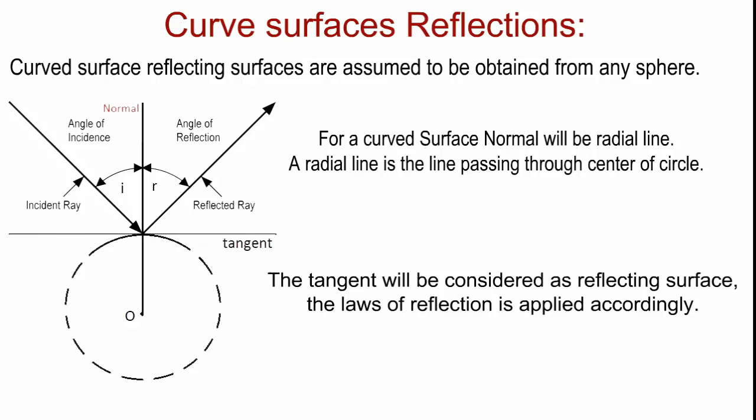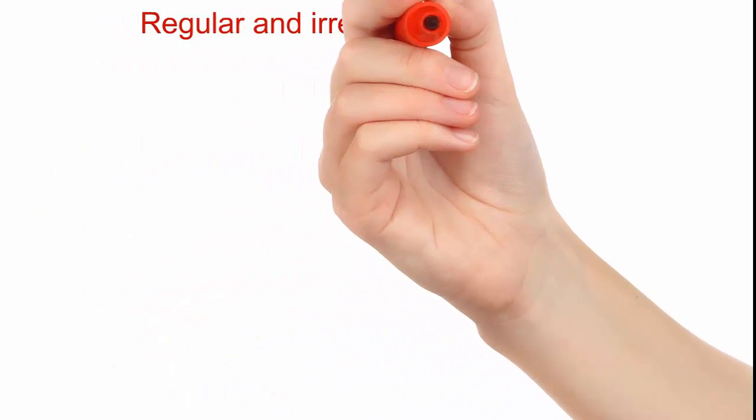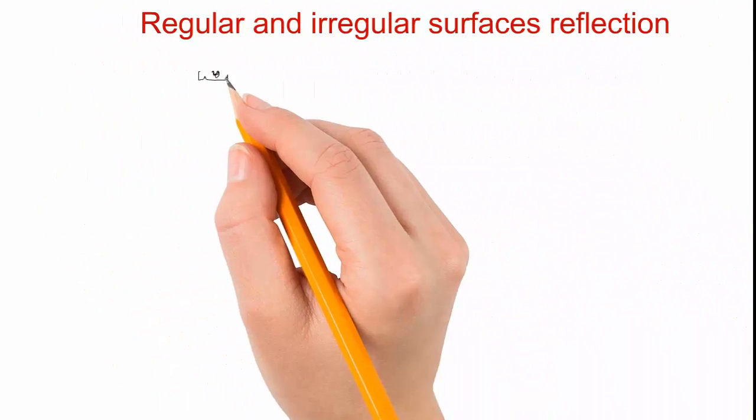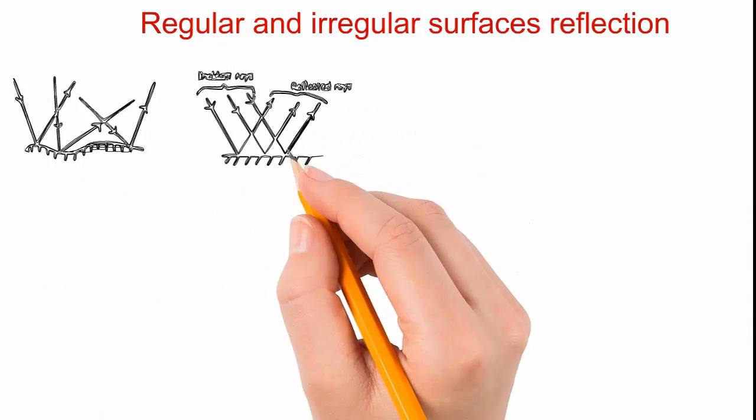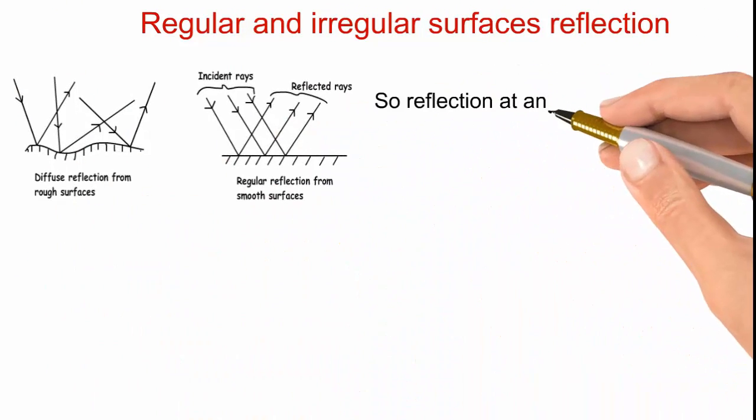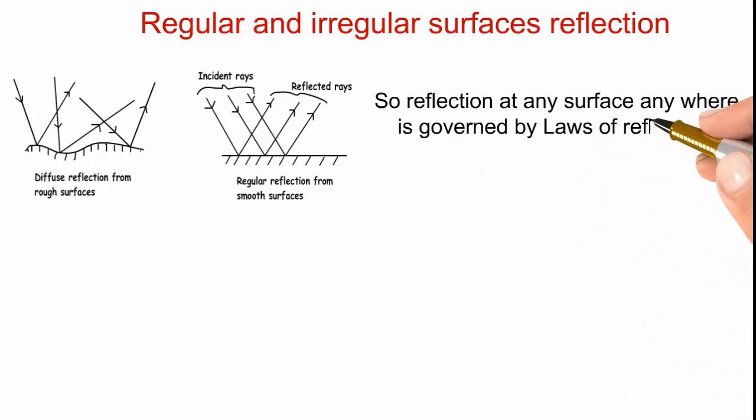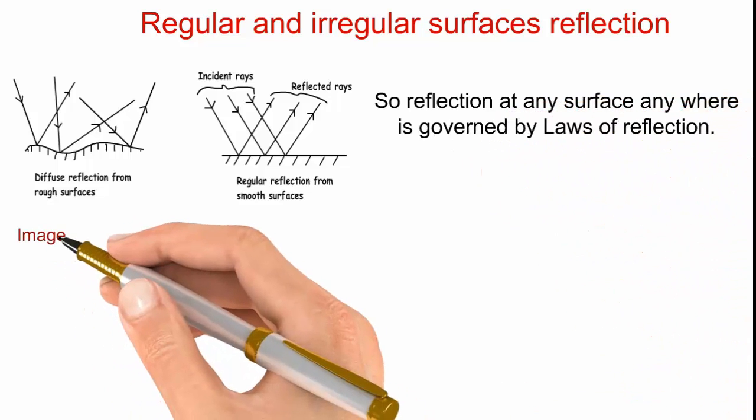As you can see from this figure, regular versus irregular surfaces reflection. You can see the pattern of reflection of light rays in the diagram for both regular and irregular surfaces. So reflection at any surface, anywhere is governed by laws of reflection.